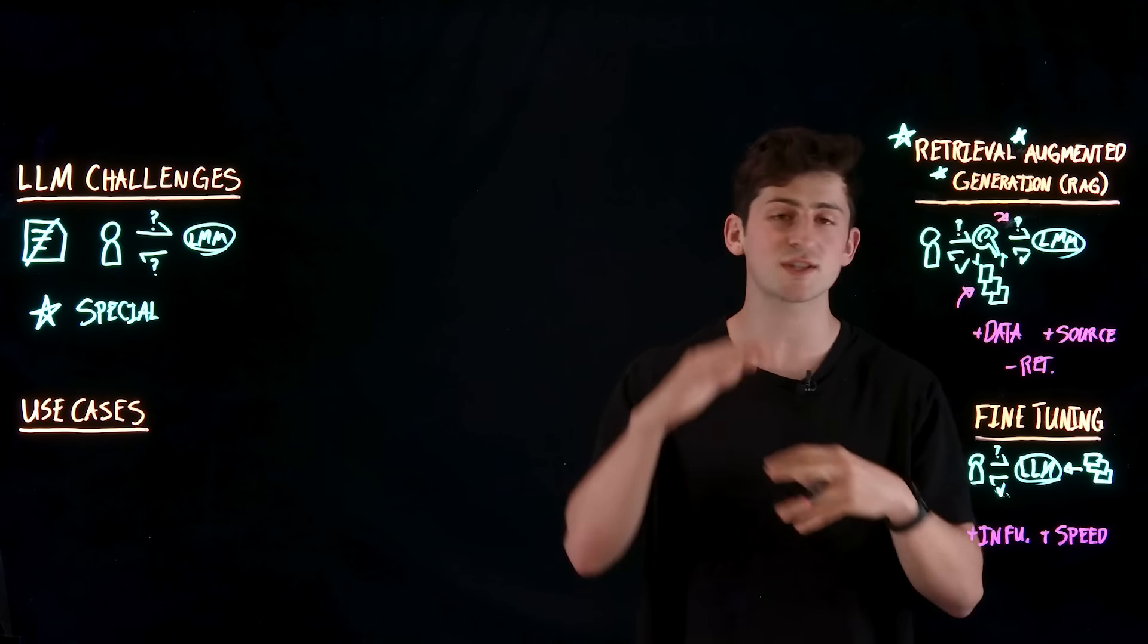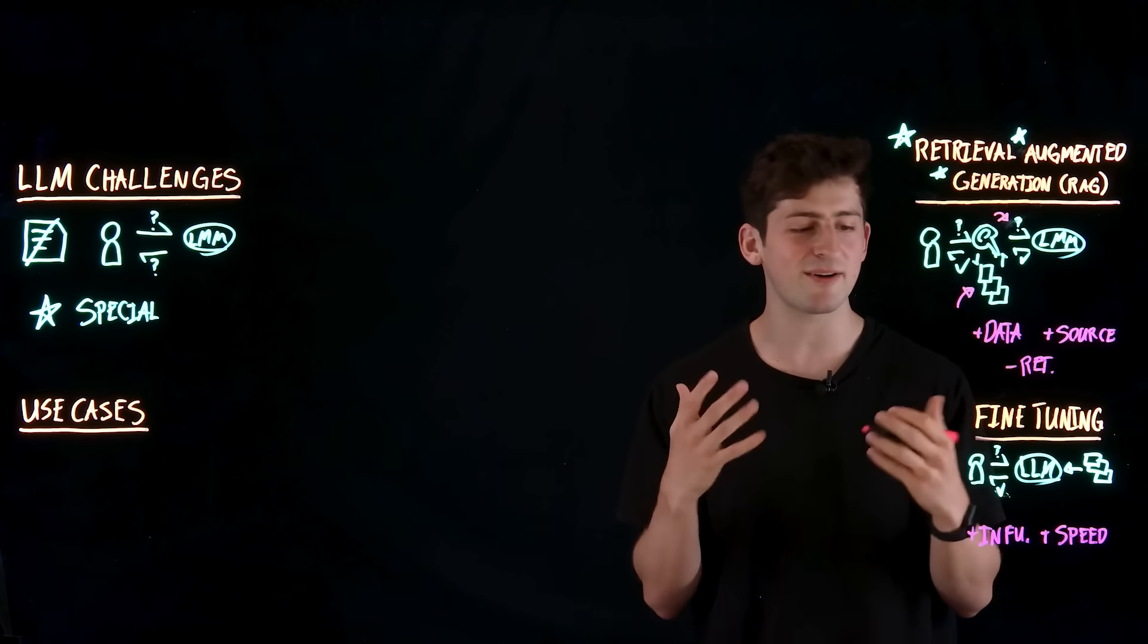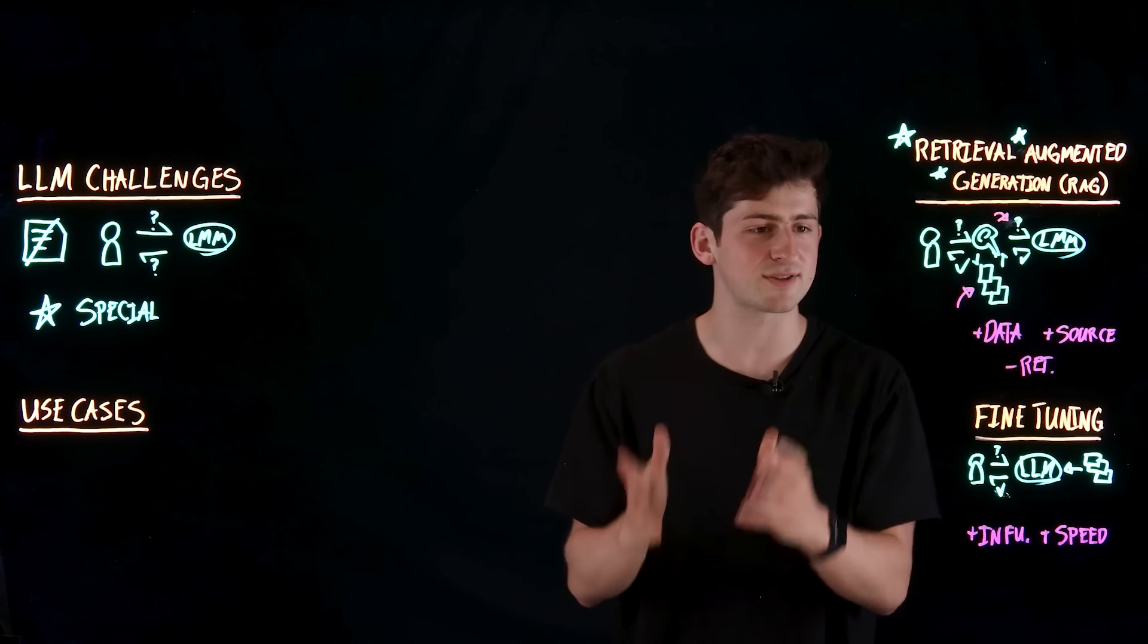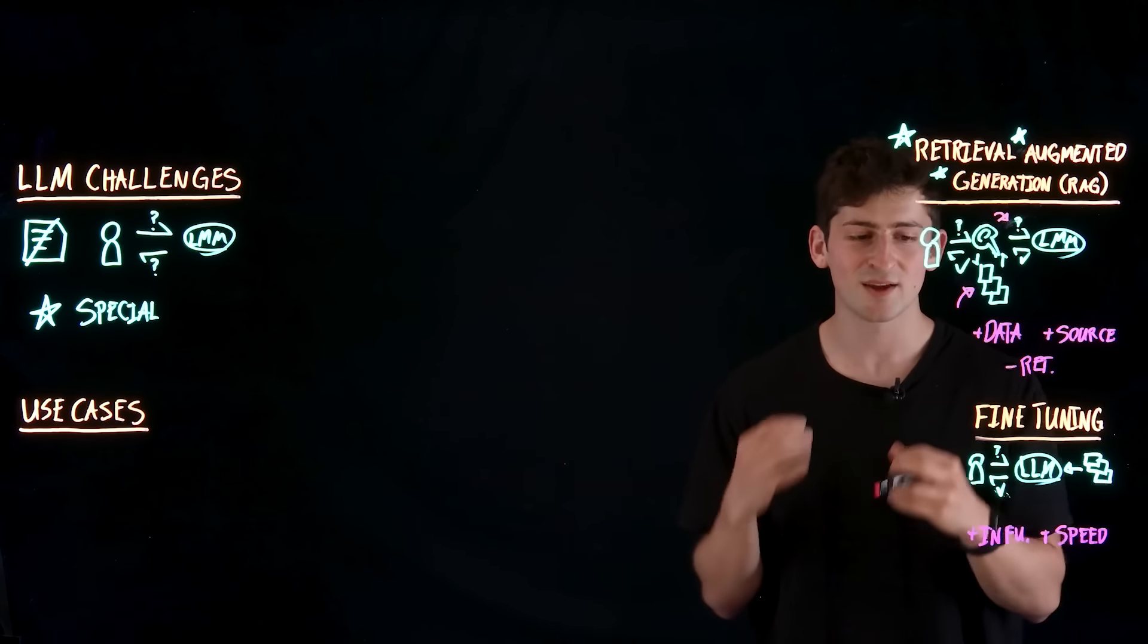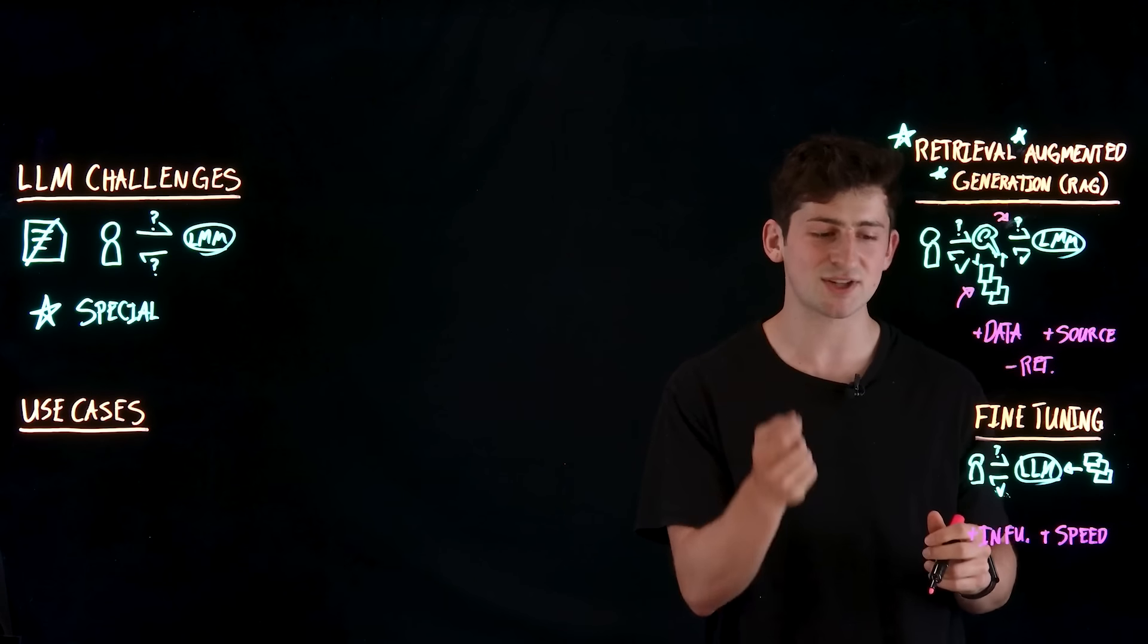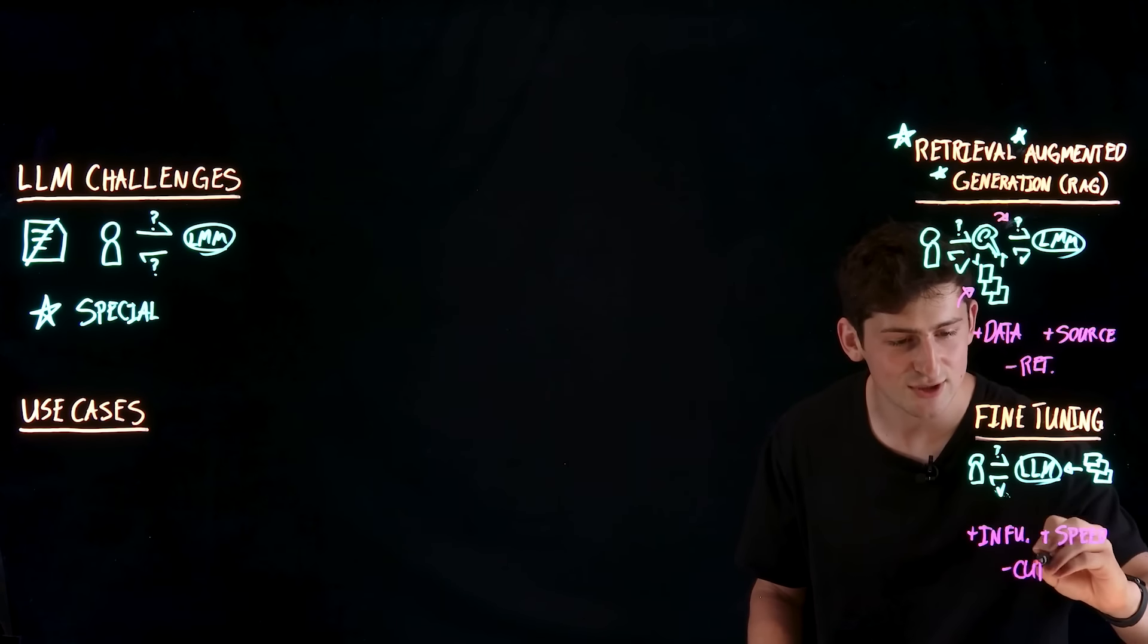So for example, we can use smaller prompt context windows in order to get the responses that we want from the model. And as we begin to specialize these models, they can get smaller and smaller for specific use case. So it's really great for running these specific specialized models in a variety of use cases. But at the same time, we have the same issue of cutoff.